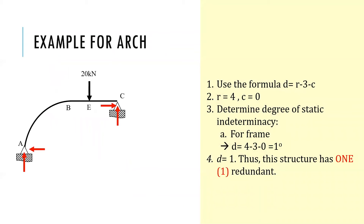Let's try for arch. We use r minus 3 minus c to determine the d for the arch. This arch has four support reactions, and there is no hinge in the system. In this case, we get d equal to 1 degree. This also indicates that this arch has one redundant.